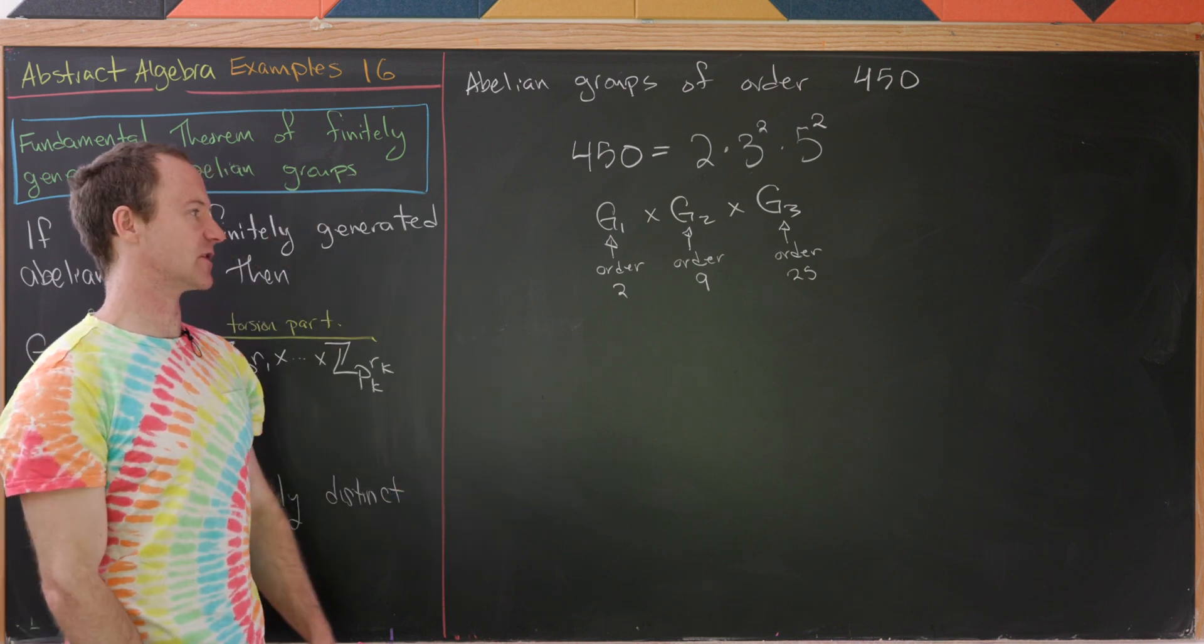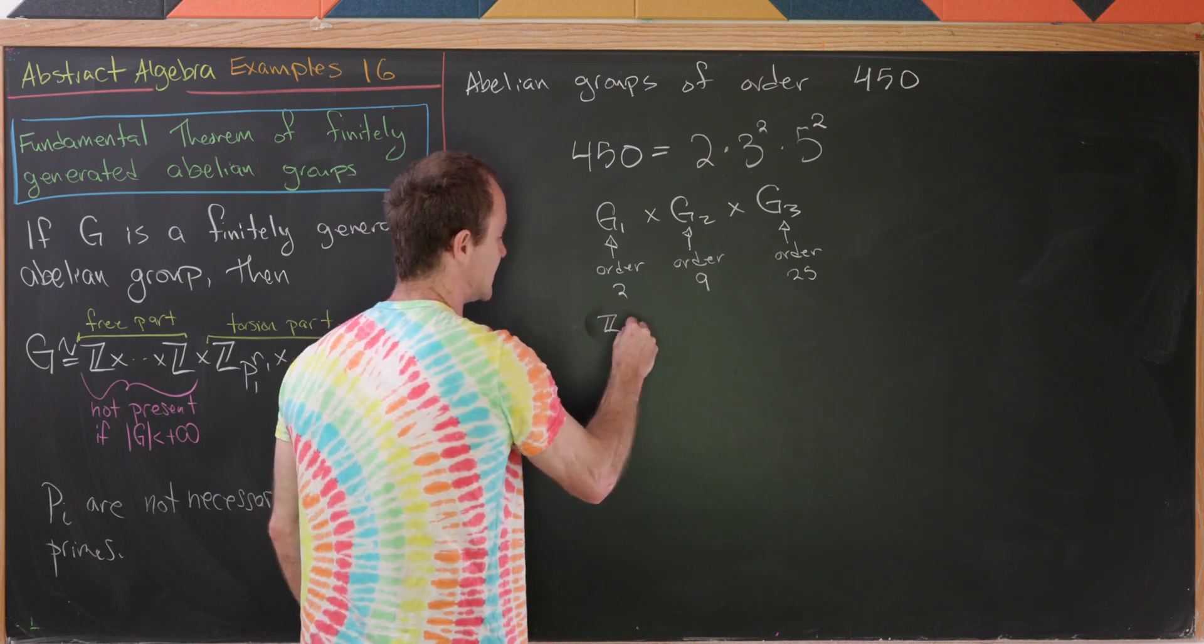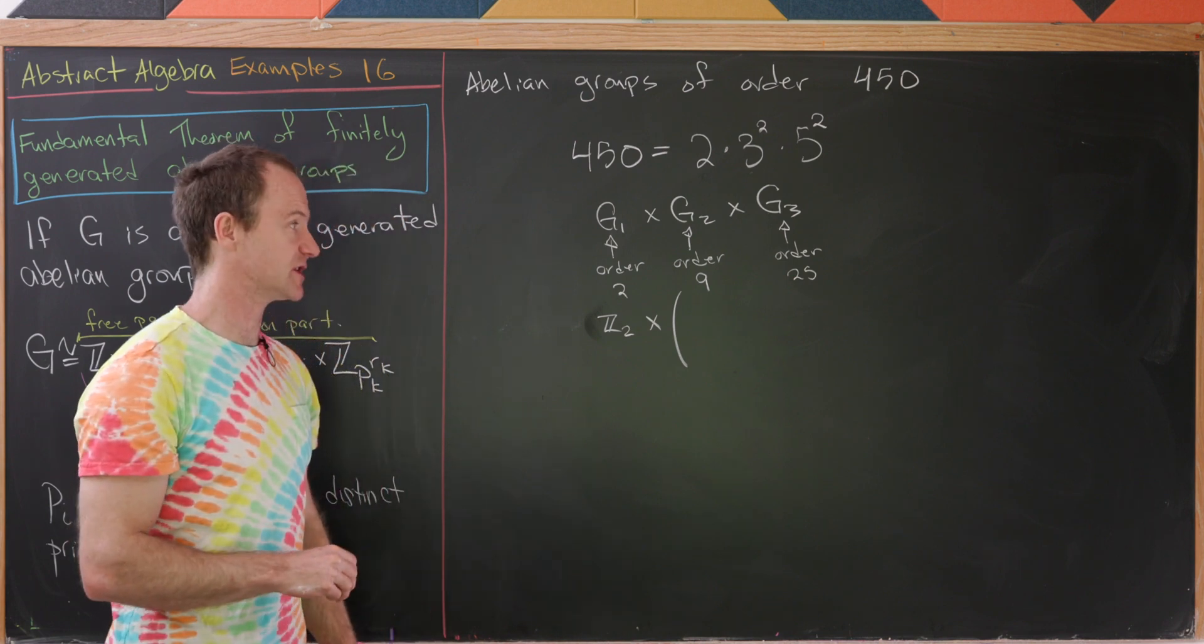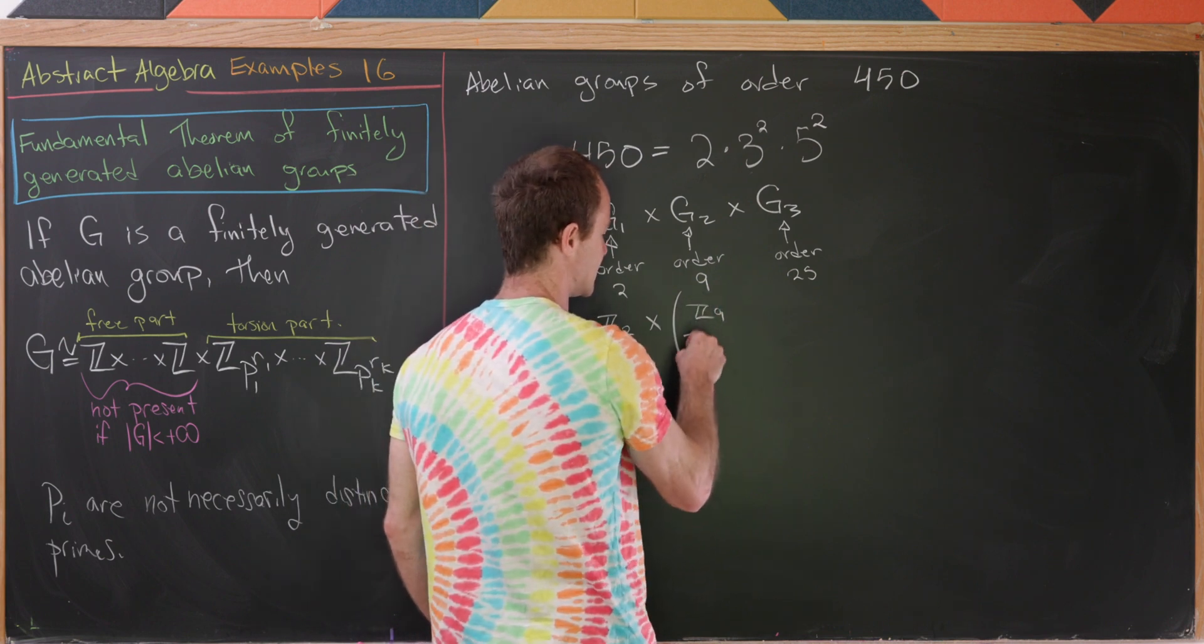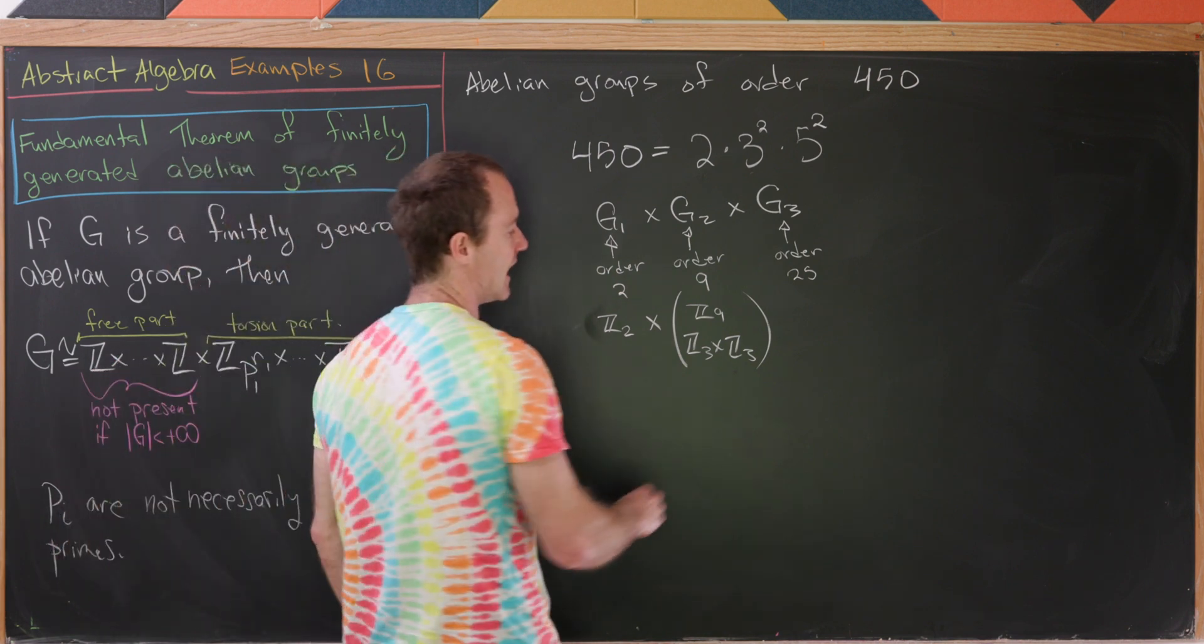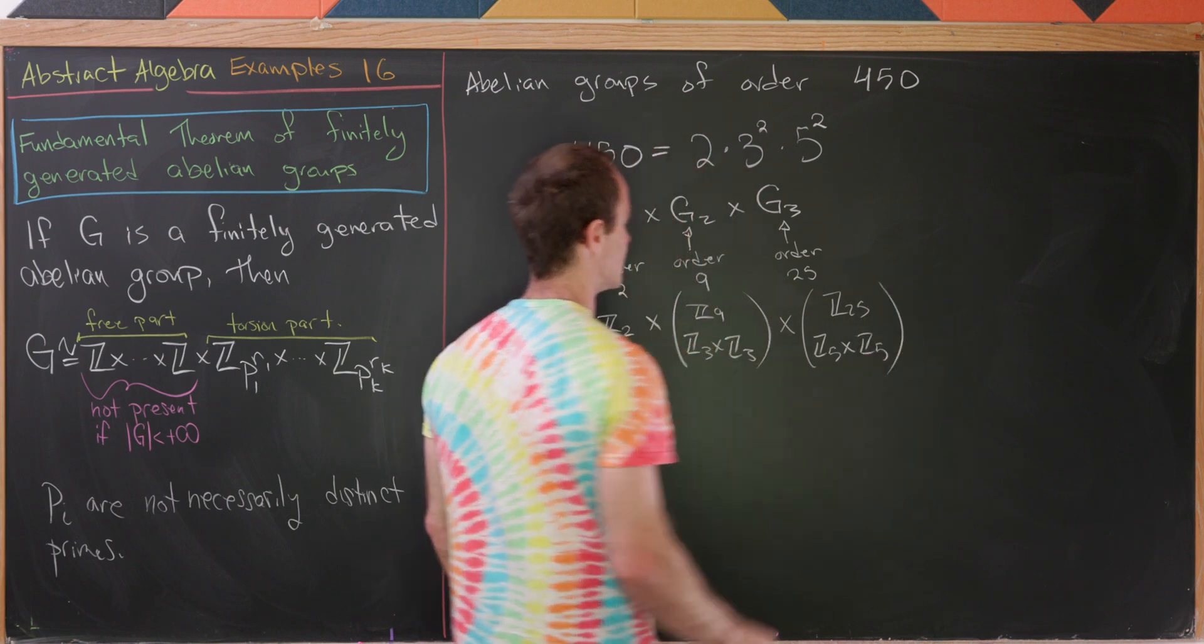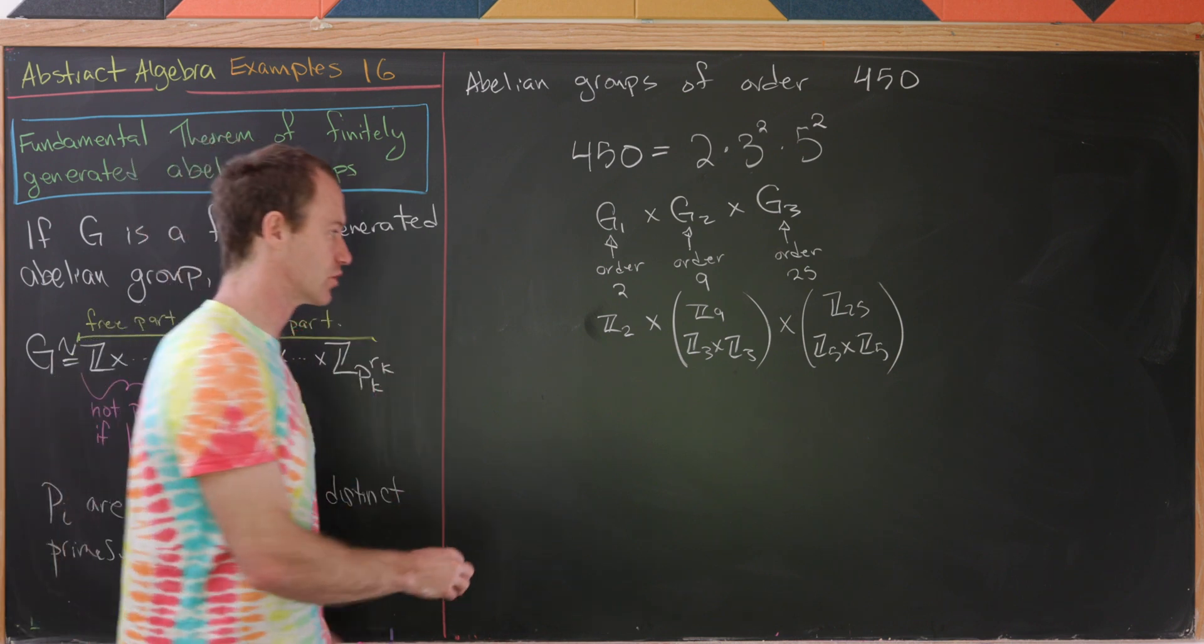We've got possibilities for a couple of these. The only possibility for G1 is Z2 because there's only one group of order 2. But by our theorem, there are two abelian groups of order 9. There's Z9, that's the cyclic one, and then Z3 cross Z3. Those are our two possibilities. And likewise, for groups of order 25, you'll have Z25 and Z5 cross Z5. Notice we've got a single choice here, two here and two here. So there are four groups in total.